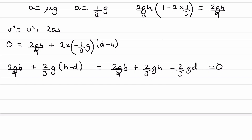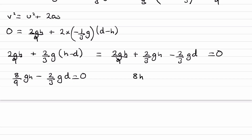Collecting the gh terms: 2 ninths plus 2 thirds equals 2 ninths plus 6 ninths equals 8 ninths. So we have 8 ninths gh minus two thirds gd equals 0. Multiplying everything by 9 and cancelling g: 8h minus 6d equals 0. Rearranging: 6d equals 8h, so d equals 8 over 6 times h, which simplifies to d equals 4 thirds h.